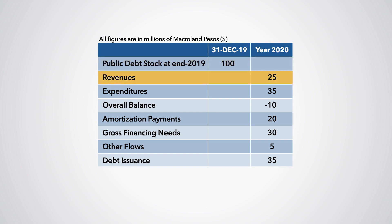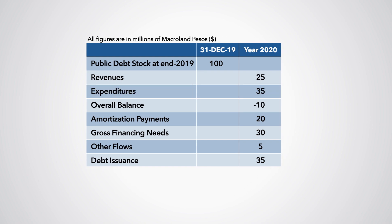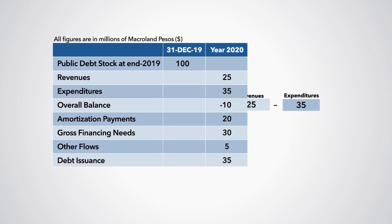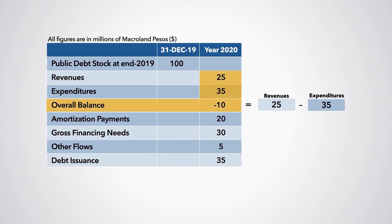In 2020, the government's revenues are projected to be 25 million Macroland pesos, and its expenditures are projected to be 35 million. Thus, the fiscal deficit is projected to be 10 million, or the overall balance is projected to be minus 10 million. Debt amortization payments are projected to be 20 million.